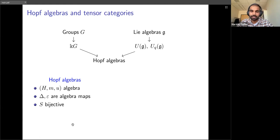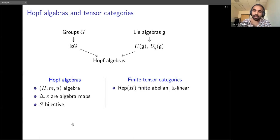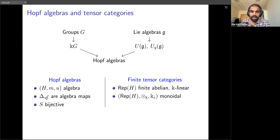I want to think about Hopf algebras even more generally. If we have a Hopf algebra H, we can think about finite tensor categories: we form the category Rep(H) of finite-dimensional H-modules. The resulting category is finite abelian and k-linear. Additionally, the maps delta and epsilon are algebra maps, and they make this category a monoidal category — using the co-product delta we can define the tensor product of two H-modules, and the co-unit epsilon turns the one-dimensional vector space k into an H-module.